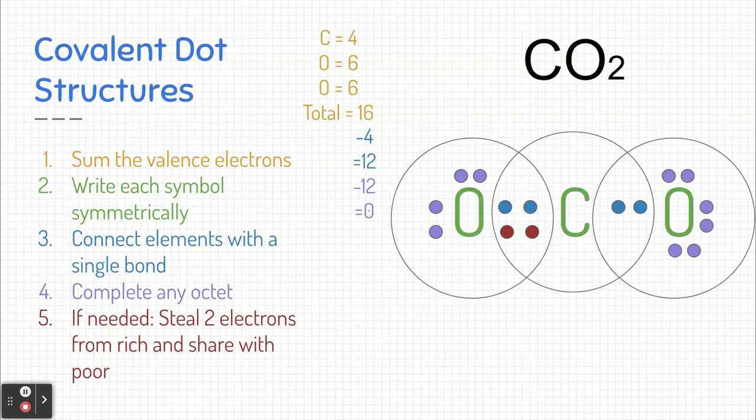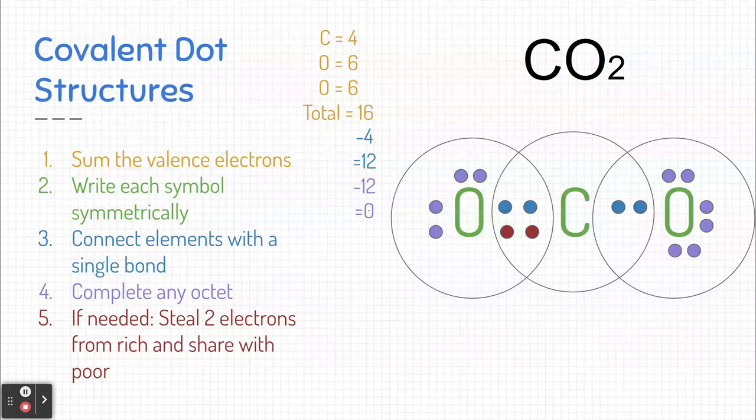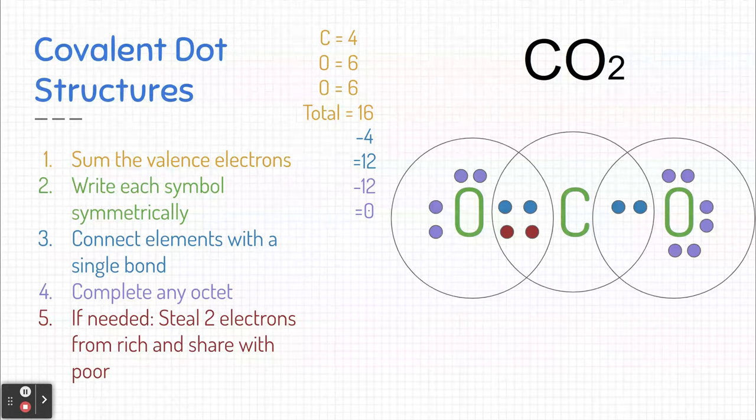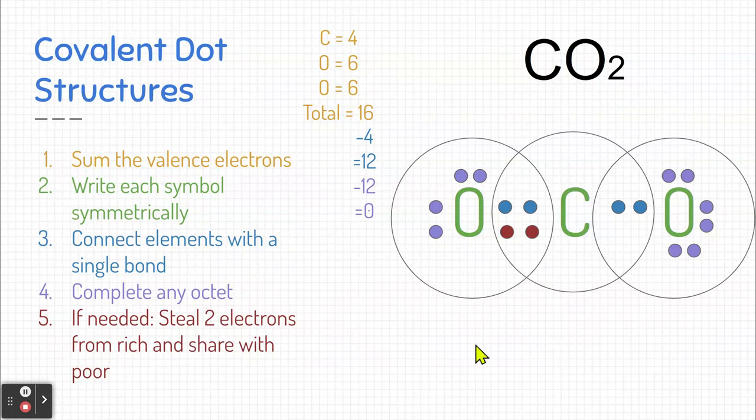Now, carbon's still not complete. Notice by moving it, we have eight for the first oxygen on the left, but carbon only has 2, 4, 6. We still need another set. So I'm going to do step five again, but to remain symmetrical, I'm going to do it with the other oxygen on the other side. So move those two electrons over with the carbon, and now we're golden. We have carbon dioxide. What you're looking at here is double bonds. The carbon is double bonded to each of the oxygens.